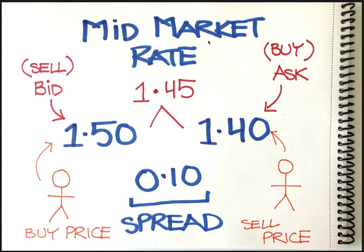Any currency pair that you see quoted on a system like Reuters or Bloomberg will be quoted in two forms. For example, this could be the pound versus the dollar, quoted like this: 1.50 and 1.40. The left-hand side is the bid price. The right-hand side is the ask price. As a bank or institution that holds this currency pair, this is the price I'm selling it, and this is the price I will buy it for. The difference between the two is called the spread — 1.5 minus 1.4 is 0.1, so 0.1 is the spread.